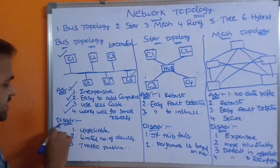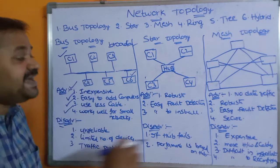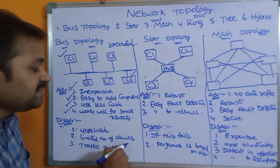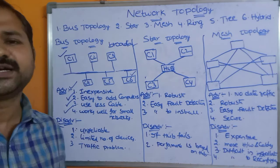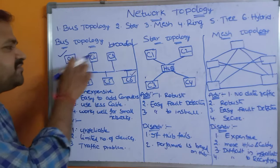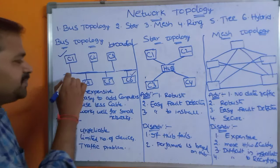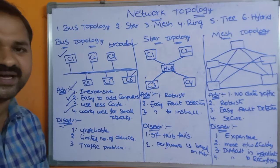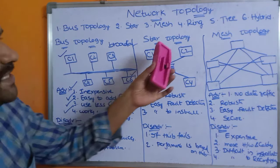The drawbacks of bus topology: first, it is unreliable — if the cable fails, the entire network fails. Second, there is a limited number of devices, as only around 100 computers can be attached. Third, there is a traffic problem — if C1, C2, and C3 transmit messages simultaneously, all share the single cable, causing collisions and excessive traffic.